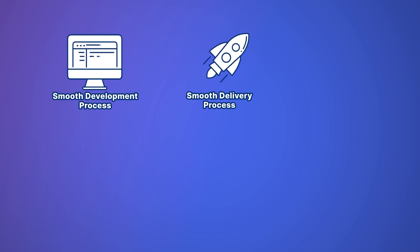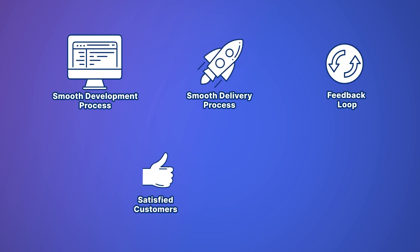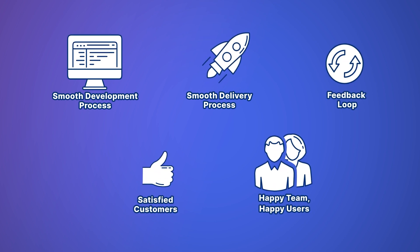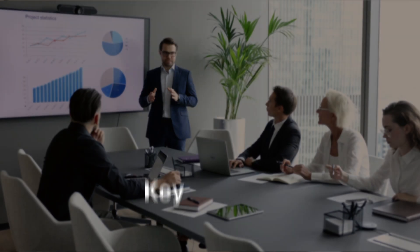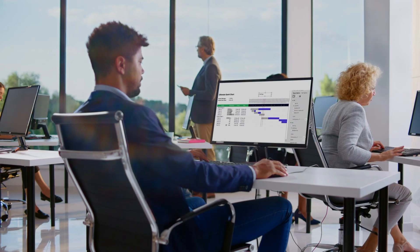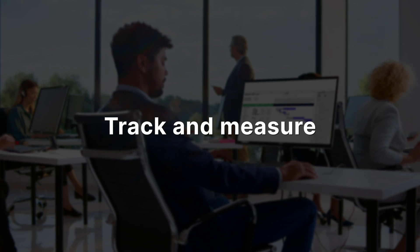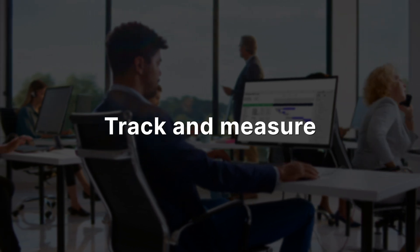This way you get a smooth development process, a smooth delivery process, and a feedback loop that leads to satisfied customers — a happy team and happy users. The bonus tip: focus on key metrics. Whether you're working with Agile, DevOps, or both, you have to track and measure the data that matters most. Assuming one framework is the best for you could hinder you from delivering the highest quality product, particularly if you've got cross-functional teams.